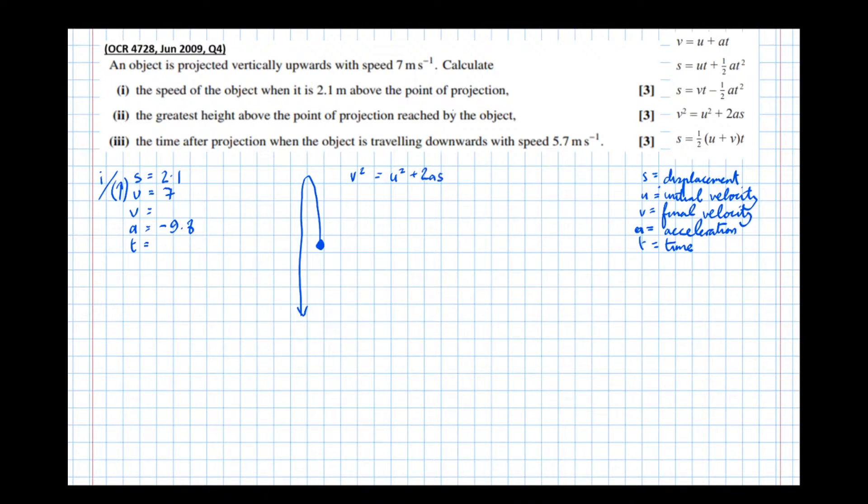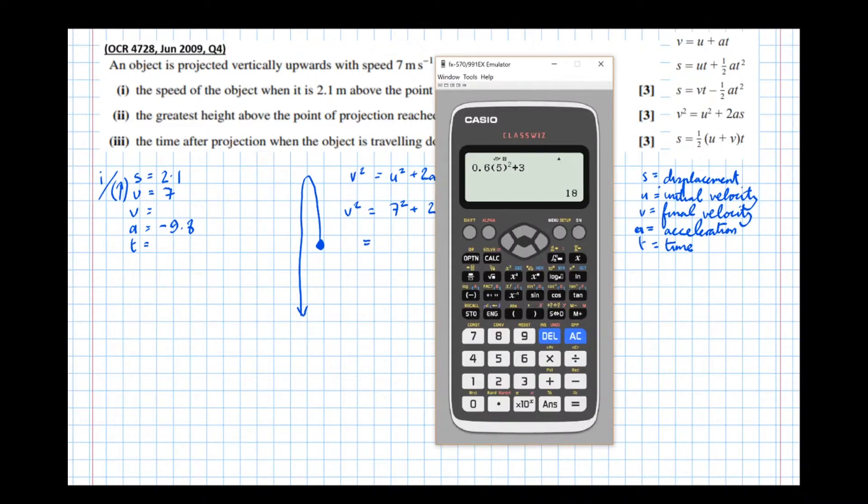Now, in the sciences, I know teachers often encourage you to rearrange the formula here and now. However, my personal opinion is that it's easier to put the numbers in first before you rearrange. So, v squared equals u squared plus 2as. And actually, this one didn't need any rearrangement.